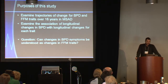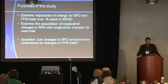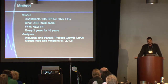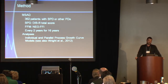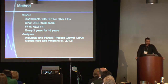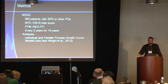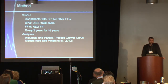So the purposes: examine trajectories of change in both borderline personality disorder symptoms as well as five-factor traits over 16 years, and most importantly, examine the association between those two kinds of changes. The MSAD sample has 362 patients with either borderline personality disorder or other personality disorders. The Revised Diagnostic Interview for Borderlines was used to reflect BPD symptoms. A 60-item short form of the NEO, the NEO-FFI, was used to reflect five-factor traits. Both measures were assessed every two years over 16 years. We used parallel process growth curve modeling.